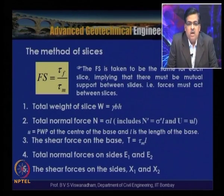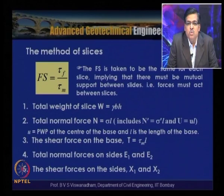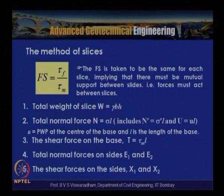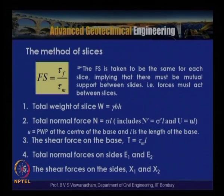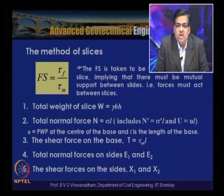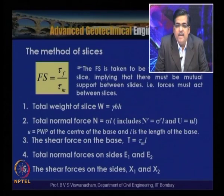The total weight of a slice is W = γ·h·b per unit length. The total normal force N = σ·l, where N' = σ'·l and U = u·l, depending on water table location. Here u is the pore water pressure at the center of the base and l is the length of the base.